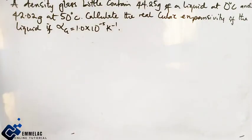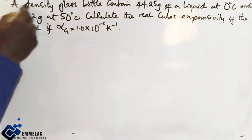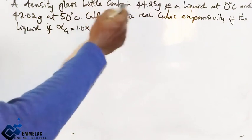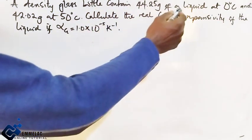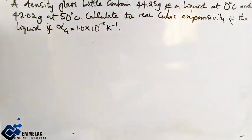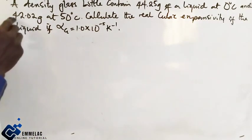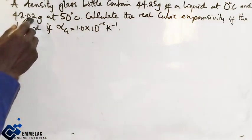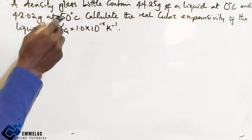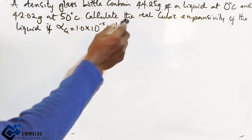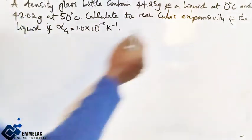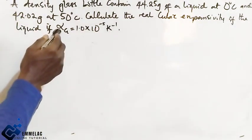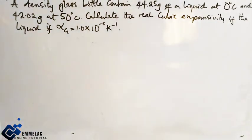Welcome to Emila Conline tutorial. Before us today is a question in linear expansivity that we need to solve. A density glass bottle contains 44.25 grams of a liquid at 0°C and 42.02 grams at 50°C. Calculate the real cubic expansivity of the liquid if the linear expansivity of glass equals 1.0×10^-5 K^-1.